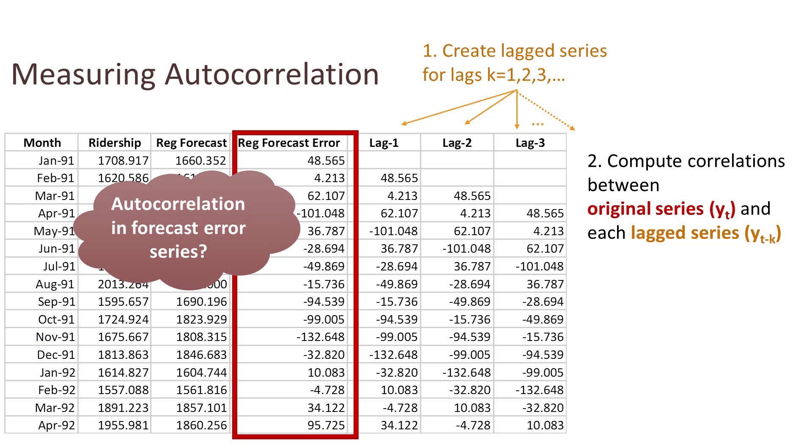For example, the lag 1 autocorrelation is the correlation between the forecast error column and the lag 1 column. This gives a positive autocorrelation of 0.64. Similarly, we can compute the lag 2 autocorrelation, the lag 3 autocorrelation, and so forth.